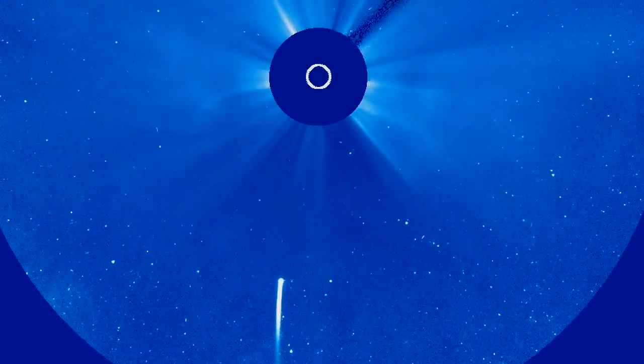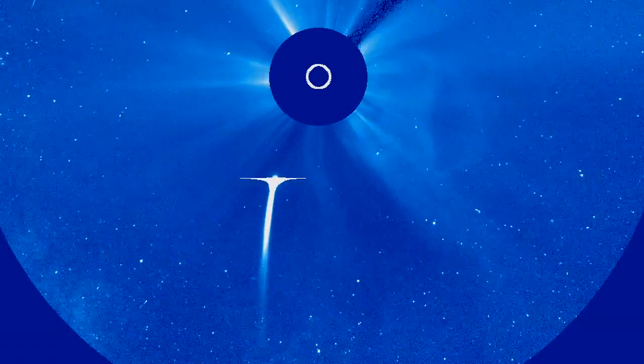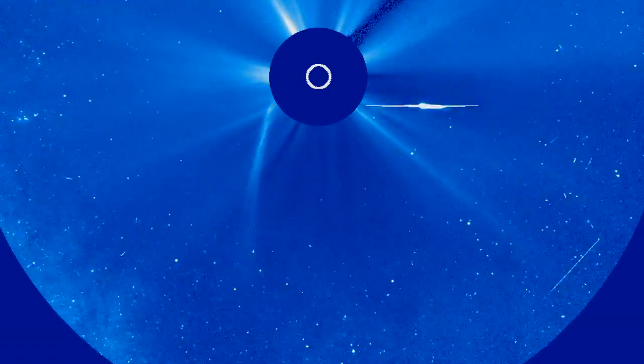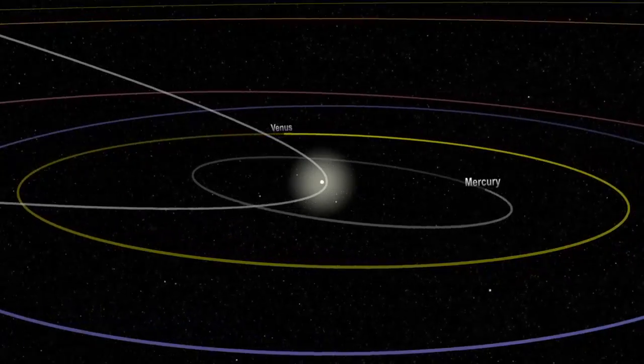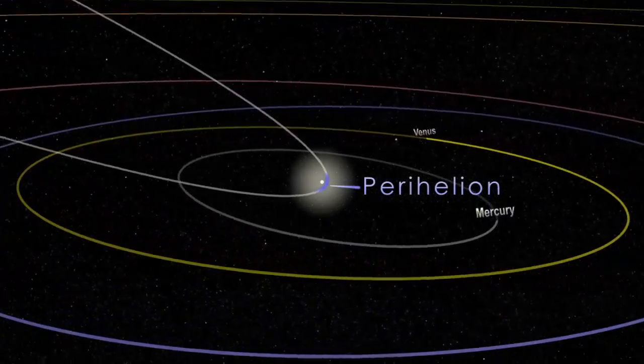All the comets that we can see from Earth are orbiting the Sun, but some belong to a special group called sungrazing comets. Sungrazers are comets that come very close to the Sun at their nearest approach, a point called perihelion.